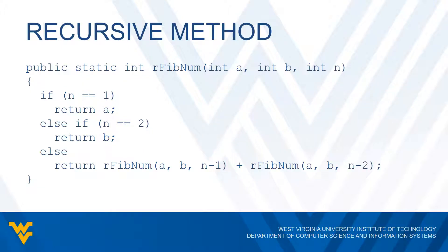Here is the recursive method for finding our Fibonacci number. We see that we have two base cases: the first base case is where N is one, and we return A; the second base case is where N is two, and we return B. Then finally, we have our recursive case, where we call RFibNum passing N minus one for one call and N minus two for the other. All we're doing is applying that recursive definition for computing our Fibonacci number.